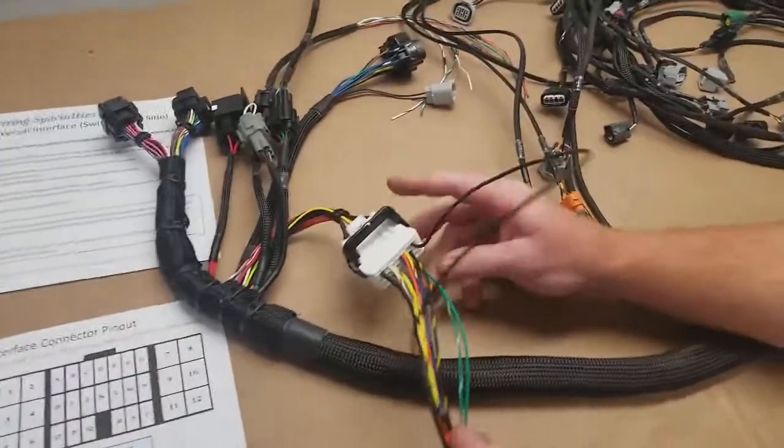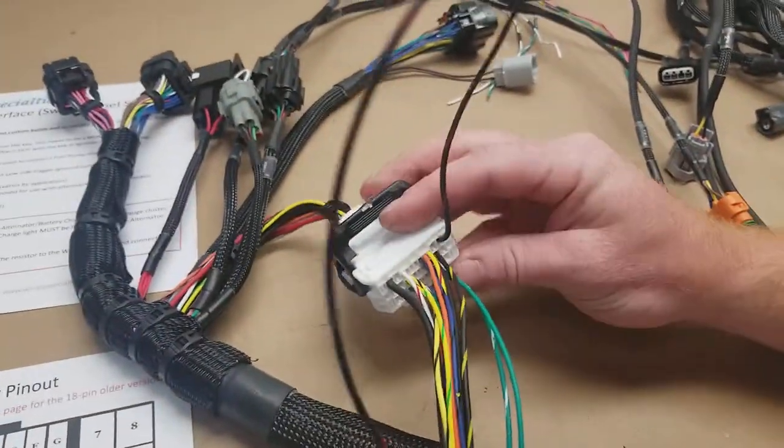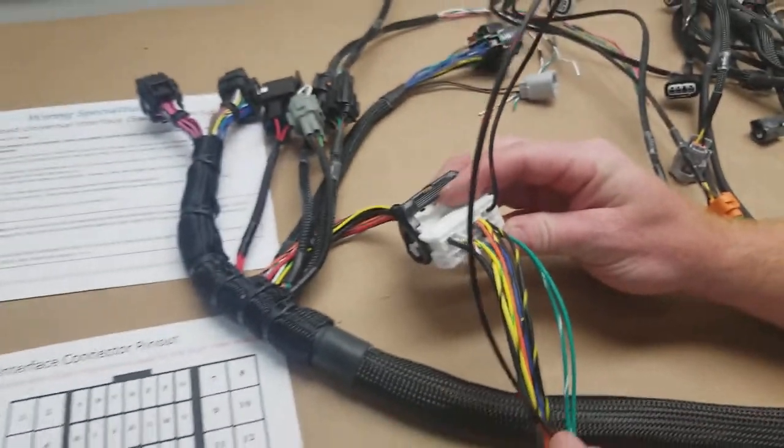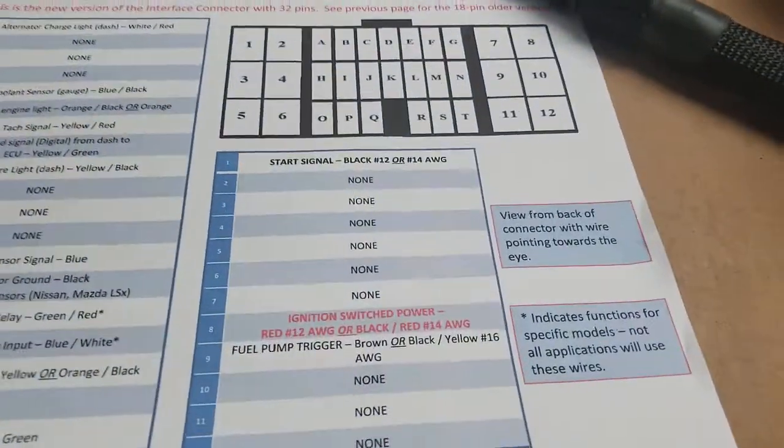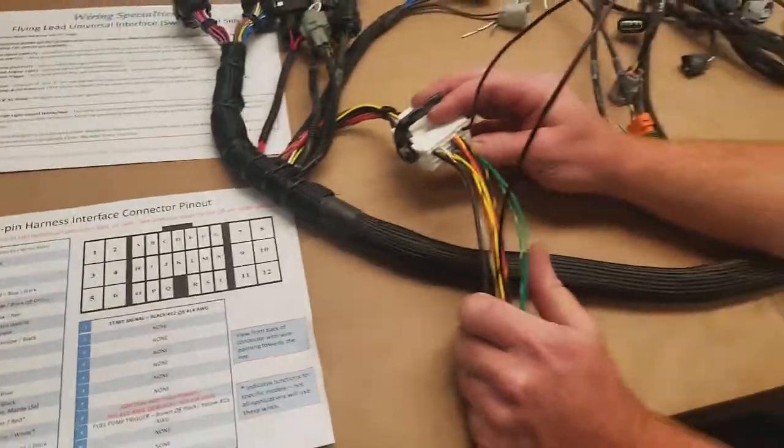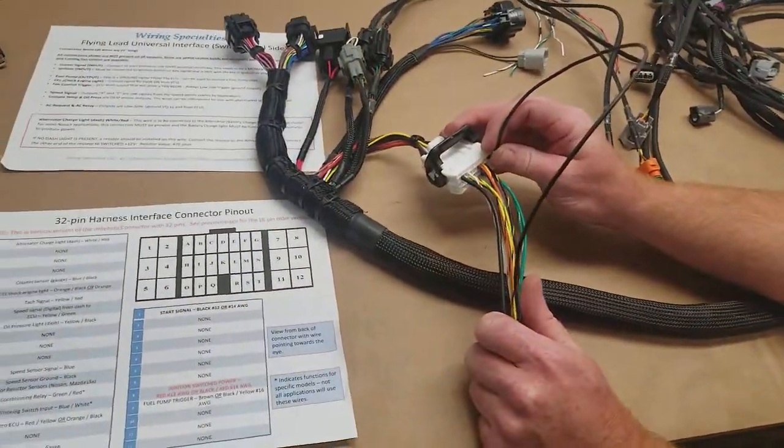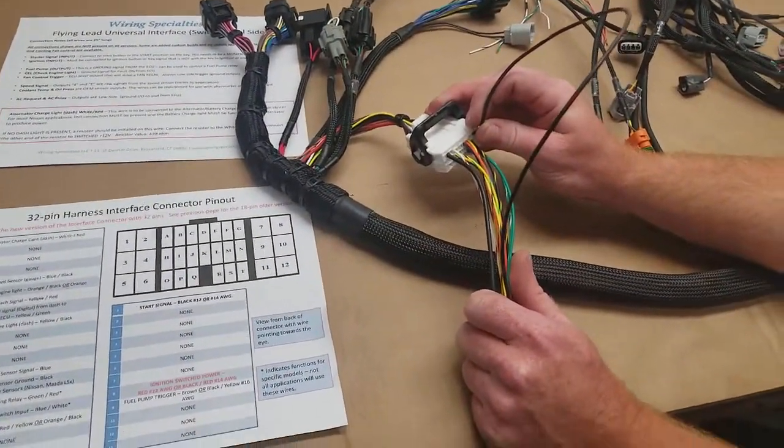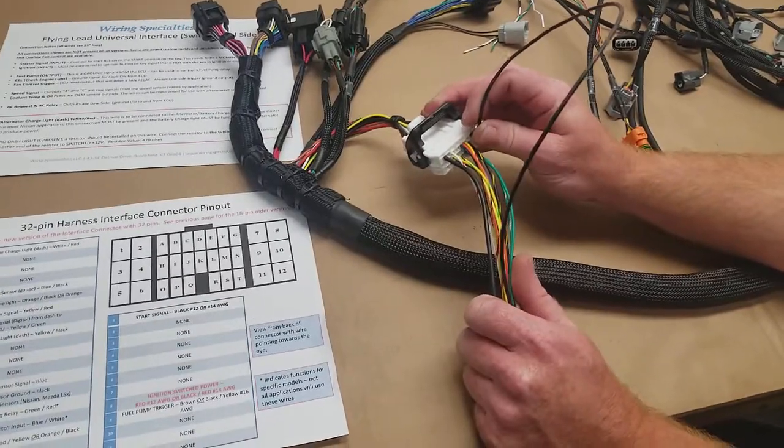The most important wire here is going to be our ignition on. That's going to be pin number eight. You're looking at the connector with the wires facing towards you, so it's that position right there. This has to be a 20-amp circuit. It has to be on when your ignition's on and also while the engine is cranking.